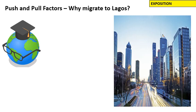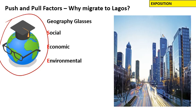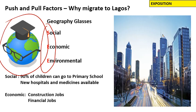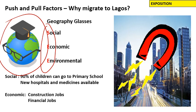Let's look at the opportunities Lagos has with our geography goggles on — looking for social, economic, and environmental reasons. Socially, 90% of children can go to primary school in Lagos, and there are new hospitals and medicines available here. Economically, there are jobs in construction, secondary industry, manufacturing, and financial jobs such as those in the financial center — banking or insurance. These are all things which pull people to Lagos.